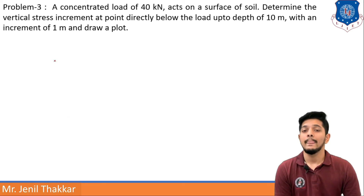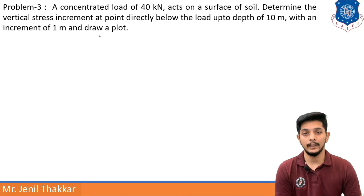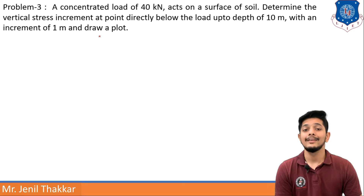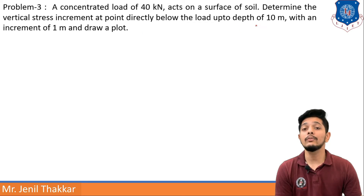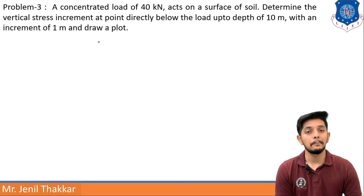Problem number three states that a concentrated load of 40 kN acts on a surface of soil. Determine the vertical stress increment at a point directly below the load. We have to take radius as 0 and calculate up to a depth of 10 meters with an increment of 1 meter, then draw a plot.